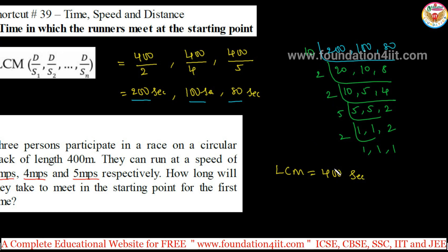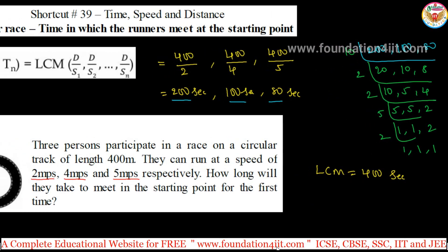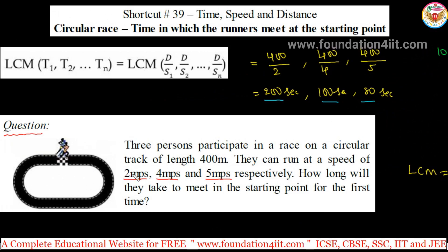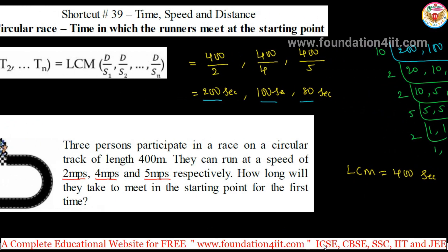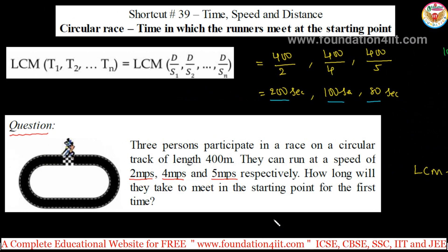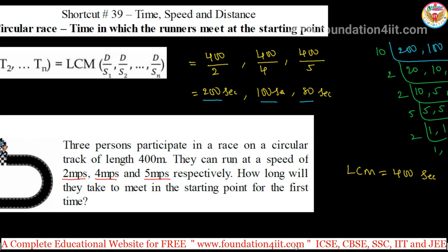After 400 seconds, the time taken by them to meet at the starting point for the first time is 400 seconds. In 400 seconds, they will meet together. So three persons racing at different speeds — how long will they take to meet at the starting point for the first time? The answer is 400 seconds.